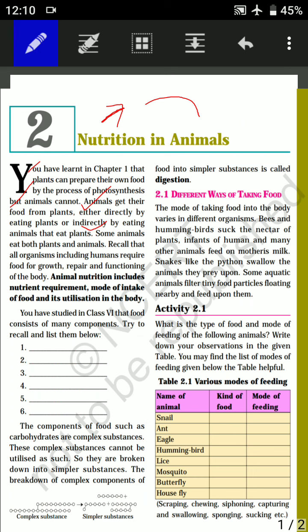Some animals eat both plants and animals. For example, human beings eat plants and also eat animals — they are known as omnivores. We must know that food is required by organisms for three things: growth of the body, repairing damaged parts, and functioning of the body.